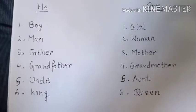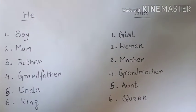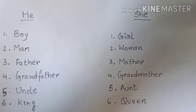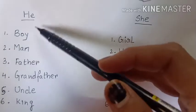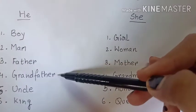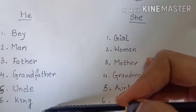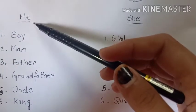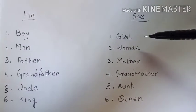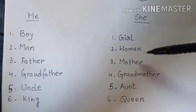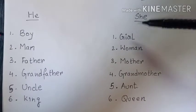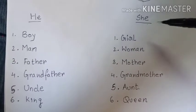Okay students, here are a few examples where we use 'he' or 'she'. Before a boy, man, father, grandfather, uncle, king — we use 'he'. Before a girl, woman, mother, grandmother, and queen — we use 'she'.